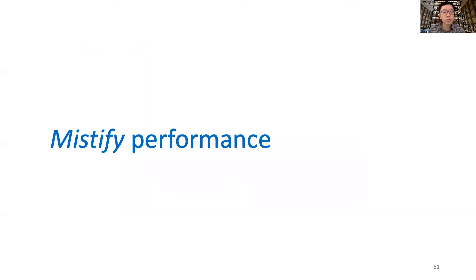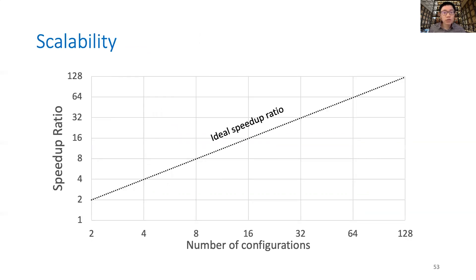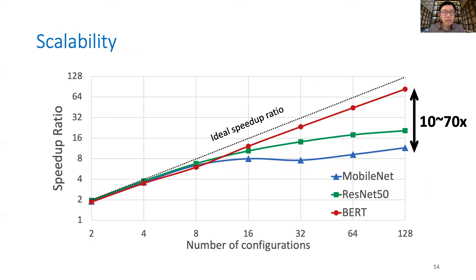Next, let's move on to Mystify's performance. Here's the general setup of the hardware, models, and workloads. First, I want to show the scalability of our collective adaptation algorithm — namely, how well it speeds up a batch of adaptation requests. The dashed line reflects the ideal speedup scenario, which is linear to the number of configurations. With the collective adaptation algorithm to extract common processing steps, we can achieve up to 70 times speedup with over 100 goals. Moreover, the more complex the models are, the closer our algorithm approaches the ideal speedup ratio, implying even higher speedup potential for future, more complex models.